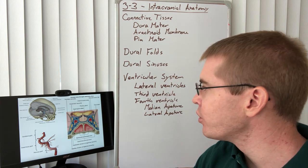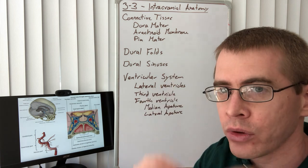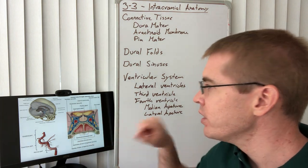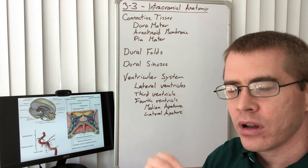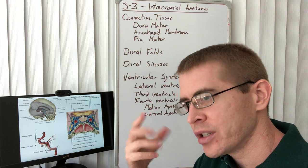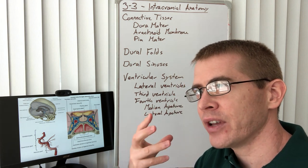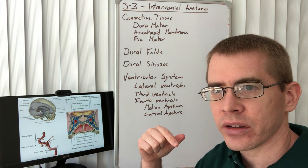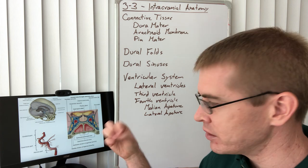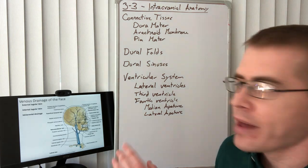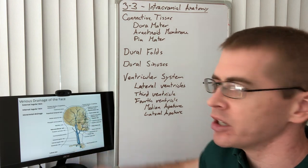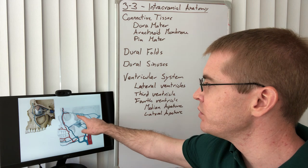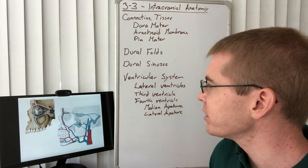If an infection travels from the face through the ophthalmic veins into the cavernous sinus, it can affect the cranial nerves and the carotid artery traveling through it. These facial infections, if they travel deep, will initially manifest as cranial nerve problems, and can then travel quickly into the systemic circulation causing encephalitis and systemic shock. This is the danger zone we've already discussed, with the superior ophthalmic vein heading into the cavernous sinus.